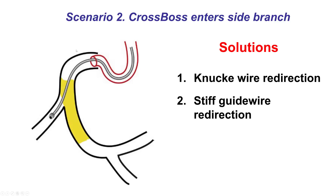The second scenario is when the CrossBoss enters into a side branch. The way around this is to do knuckle wire redirection, or redirect using a stiff guide wire going into the occlusion. This often requires viewing in orthogonal views — for example, LAO and RAO for the right coronary artery.